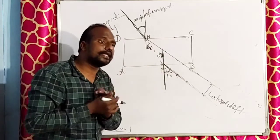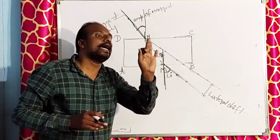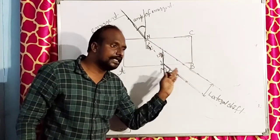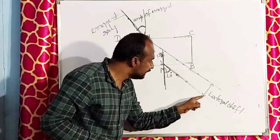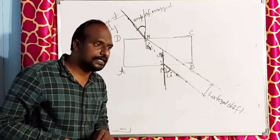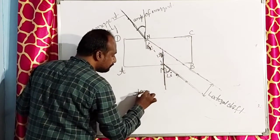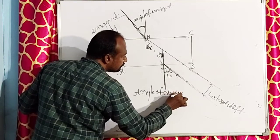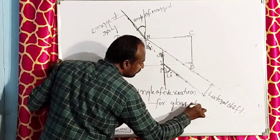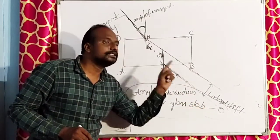The distance between the incident ray and the emergent ray is called lateral shift. The angle between the incident ray and the emergent ray is called the angle of deviation. Since the incident ray and emergent ray are parallel for a glass slab, the angle of deviation for a glass slab is zero.